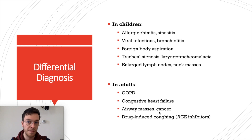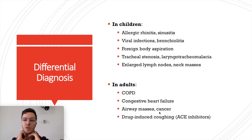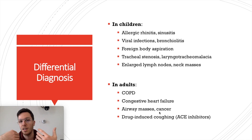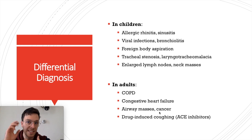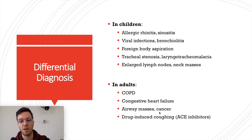It may also look like enlarged lymph nodes in the neck obstructing airflow, or even malignant masses. In adults, the most common differential is COPD, but it can also look like congestive heart failure, airway masses, cancer, or drug-induced coughing — most commonly caused by ACE inhibitors.